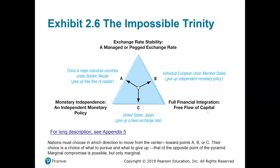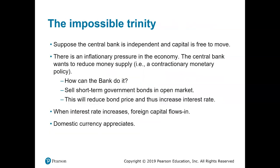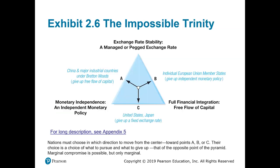Let's consider an example. Suppose the central bank is independent and capital is free to move. The central bank can adopt either an expansionary or contractionary monetary policy depending on national priority, with no pressure from the government or other countries. On the other hand, there is no restriction on the movement of capital.